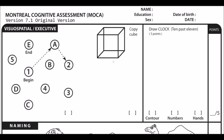Moving to the cube, the instructions are fairly straightforward. You indicate to the client: 'Copy this drawing as accurately as you can in the space below.' A point is given for a correctly executed drawing. The drawing must be three-dimensional, all lines must be drawn, and no lines can be added. The lines need to be relatively parallel and their length similar. No point is awarded if any of those criteria are not met.